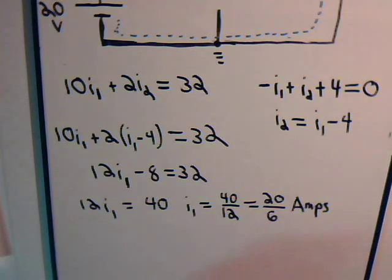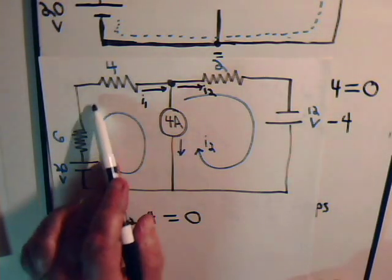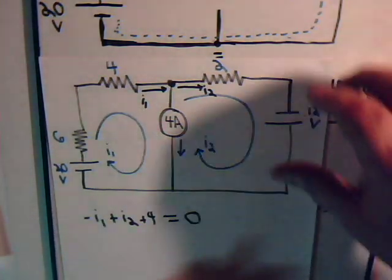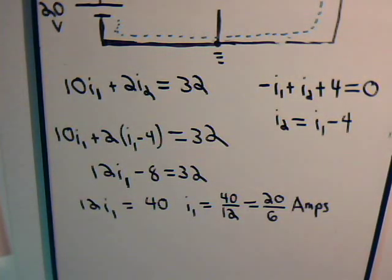That came out with a positive sign for I1, so we know that mesh current I1 would indeed be in a clockwise direction. Now, what about I2?